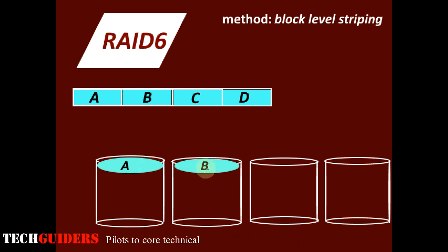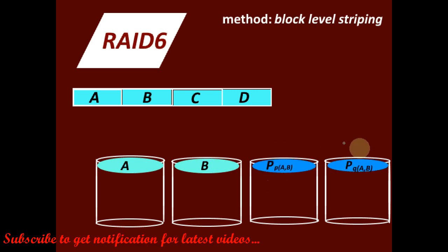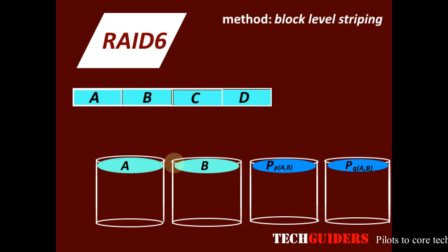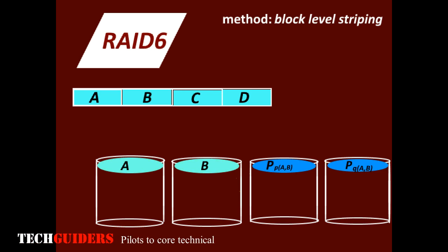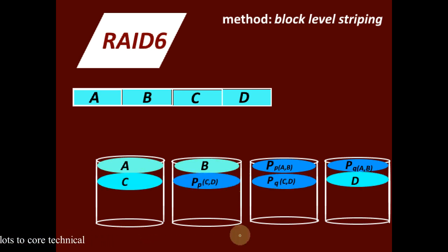But for each stripe it uses two parity blocks. With these two parity blocks, RAID 6 is able to handle at a time two disk failures. Also, these parity blocks are distributed among all the disks, similar to RAID 5. This will avoid the bottleneck on one or two single parity disks.